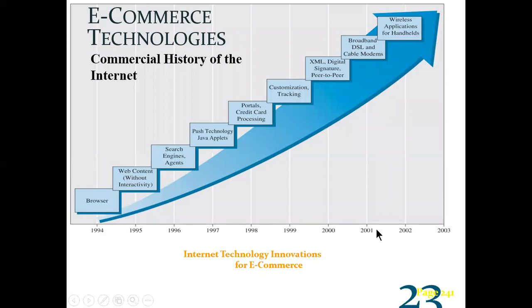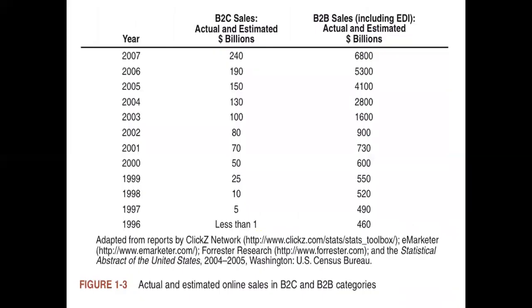This diagram shows e-commerce technologies and the commercial history of the internet. You can see how e-commerce has exploded since 1994 to 2003 with regards to the growth of the technology. This chart shows the growth of e-commerce as we move toward the 2000s and beyond.